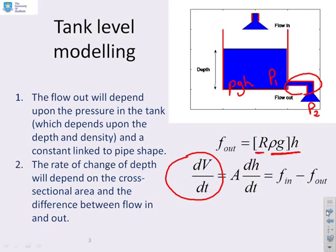So A, the cross-sectional area, dH/dt, the rate of change of depth with time. Now, clearly, the rate of change of volume with time has got to be the difference between the flow rate in and the flow rate out. So we have a very simple equation there.